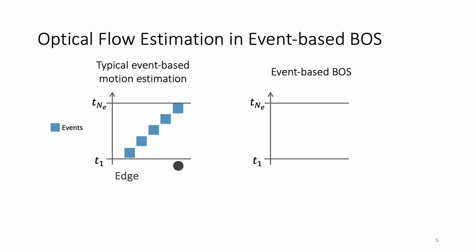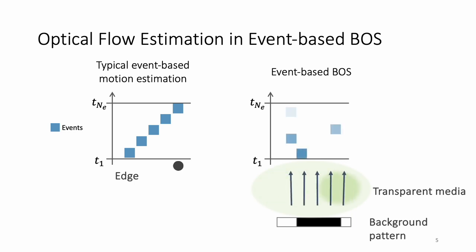In contrast, in the BOS setting, we have a background pattern, transparent media between the pattern and the lens, and the light rays travel from the pattern into the image plane. The changes in media density reflect the light rays and hence produce events.